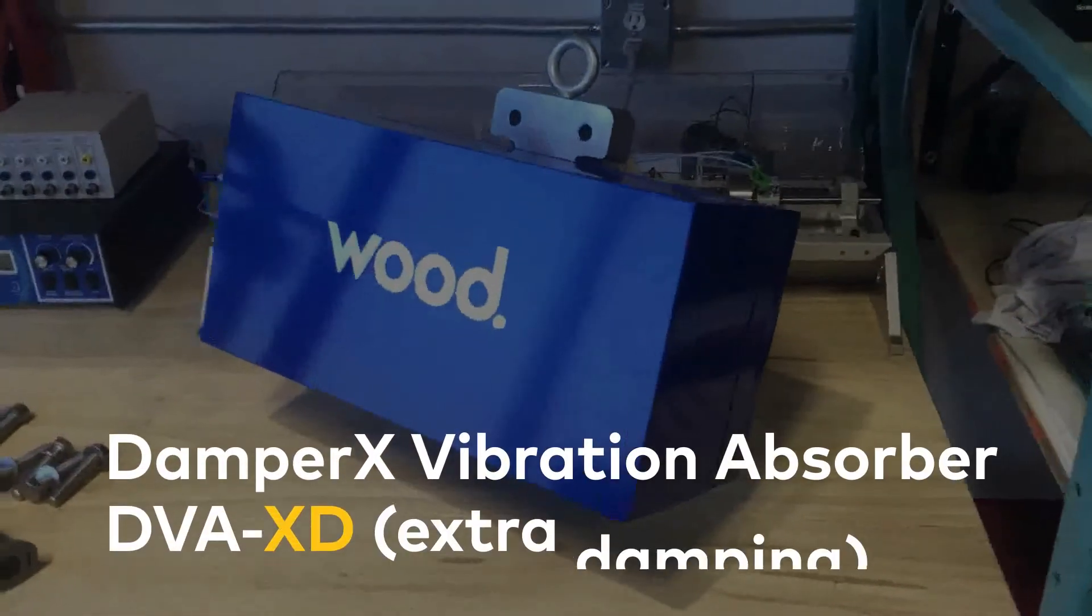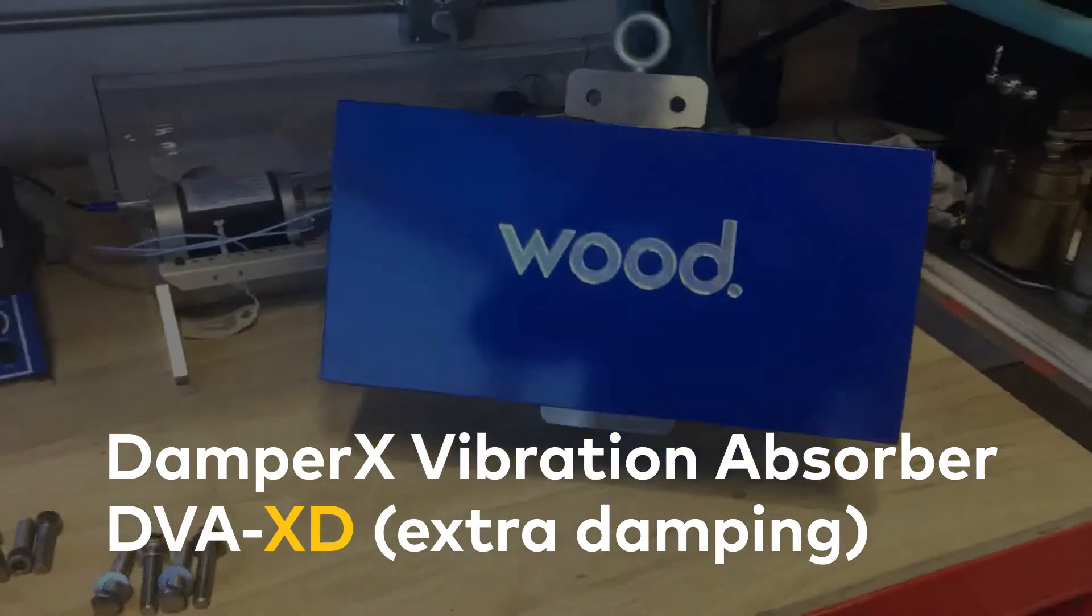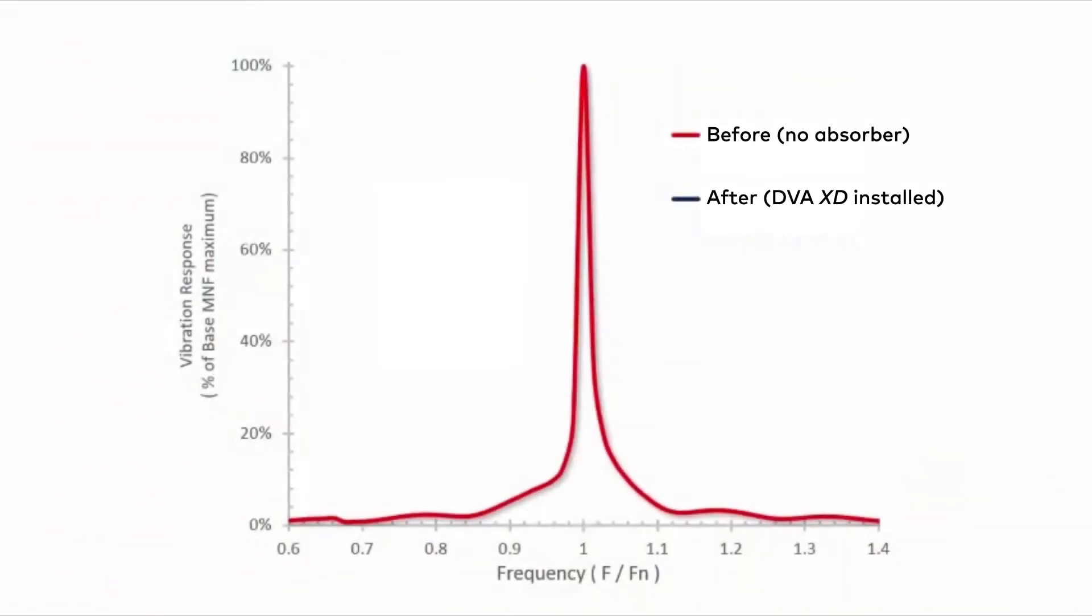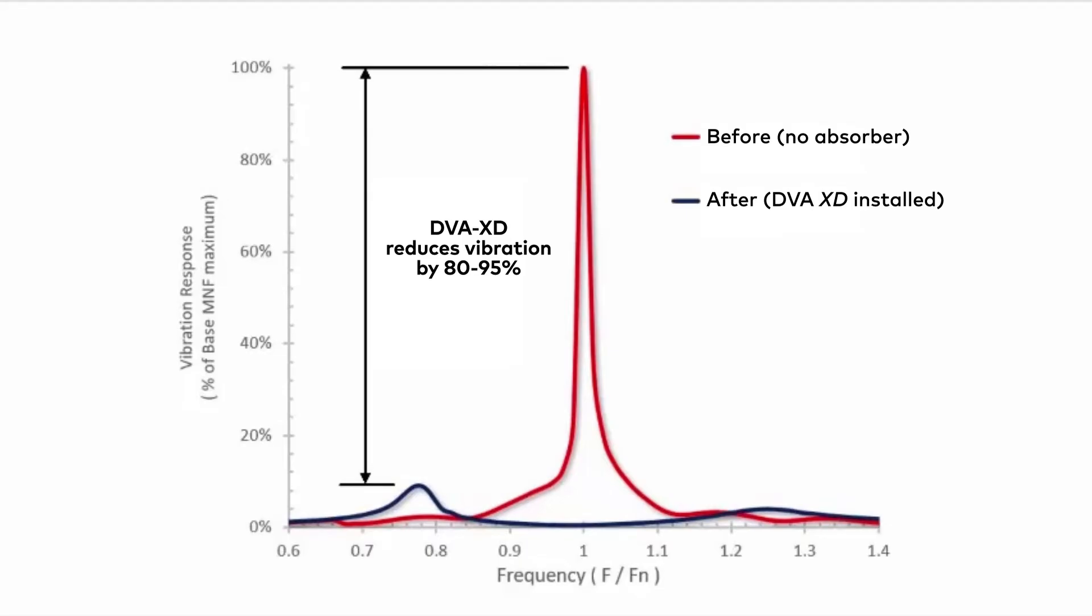So meet Woods newest addition to the DVA lineup, the DVA XD. This is the highest damped version of our DVA and typically produces a reduction of 80 to 90 percent from base levels. That means the DVA XD can take on even the most challenging vibration problems.